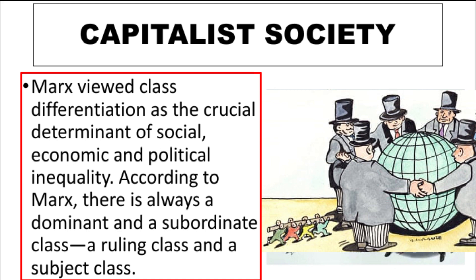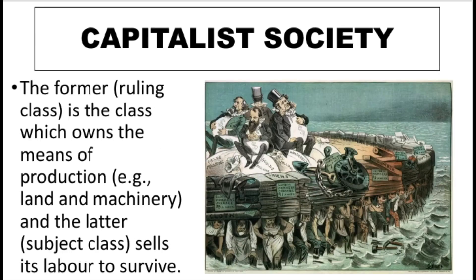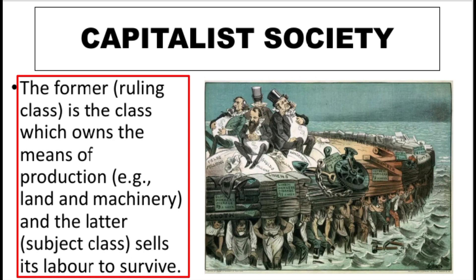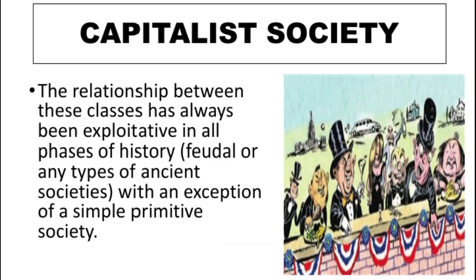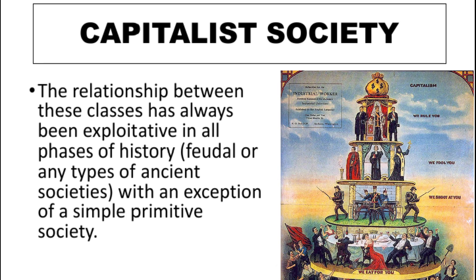According to Marx, there is always a dominant and a subordinate relationship between the ruling class and the working class. The ruling class owns the means of production including land, labor, and machinery. The working class, or subject class, works as labor for their survival. The relationship between the ruling and working class is always exploitative throughout all phases of history, whether feudal or ancient societies.